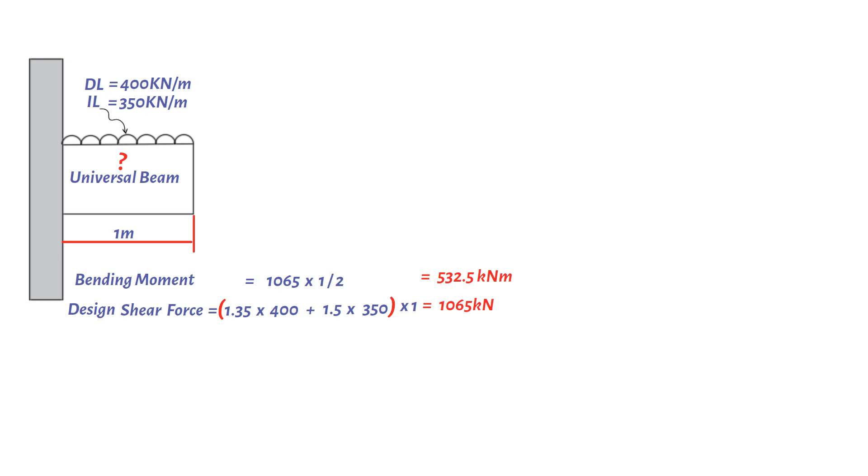Assuming the design strength of steel is 275 N per square millimeter, we should be able to estimate the initial section selection. The plastic modulus should be greater than the design bending moment 532.5 kN multiplied by 10 to the power of 6 divided by 275. This corresponds to 1936 times 10 to the power of 3 cubic millimeters, which is equivalent to 1936 cubic centimeters.